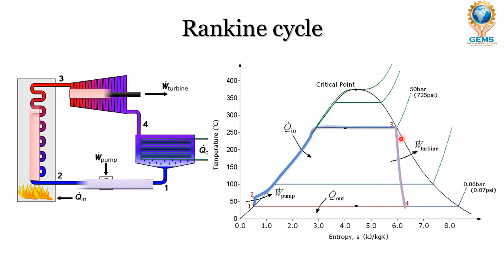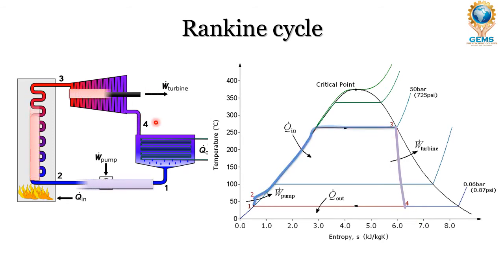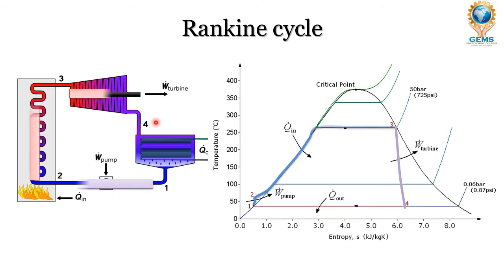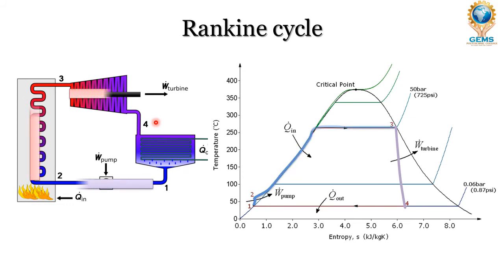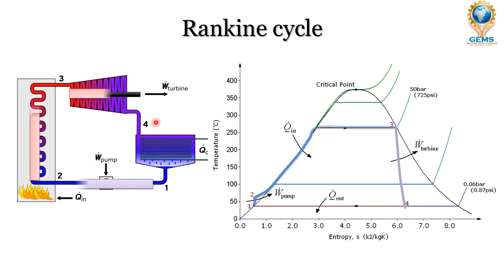Point 3 is a completely dry saturated point and point 4 is the exit of the turbine. The exit of the turbine — point 4 — is in the mixture region because in the turbine the pressure and temperature get reduced, so some particles may condense. Both vapor particles and water particles are present at point 4.